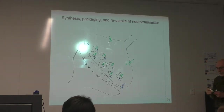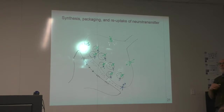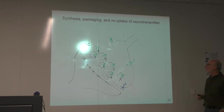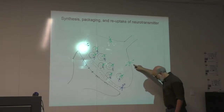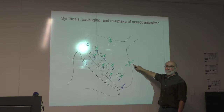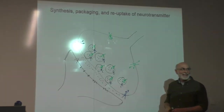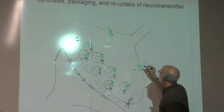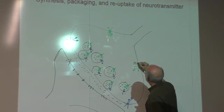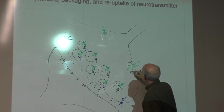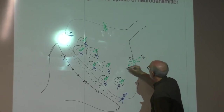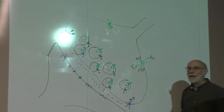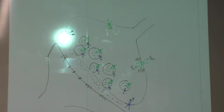I've decorated this diagram with some things and I'm going to ask you to narrate the story. What is this? The sodium-potassium ATPase. ATP is hydrolyzed, releasing ADP, pumping sodium out and potassium in, creating the sodium gradient that we need.